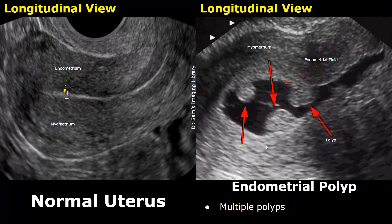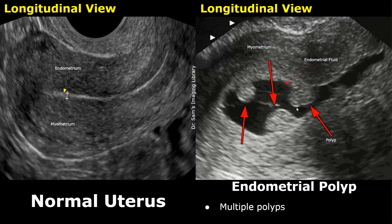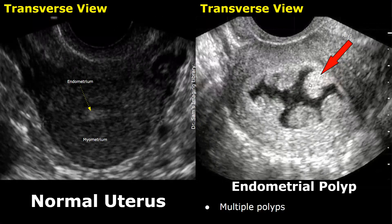Multiple polyps can also occur in some cases. In this image we can see four polyps in the endometrial cavity with a significant amount of endometrial fluid. This image in transverse plane also shows multiple polyps with endometrial fluid.